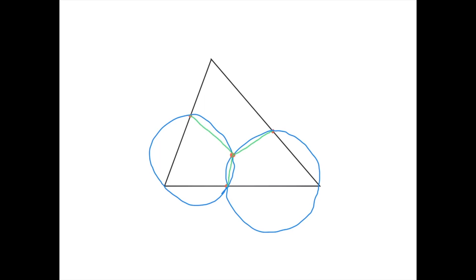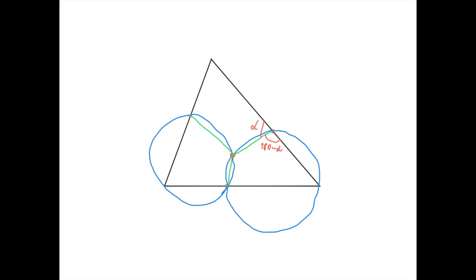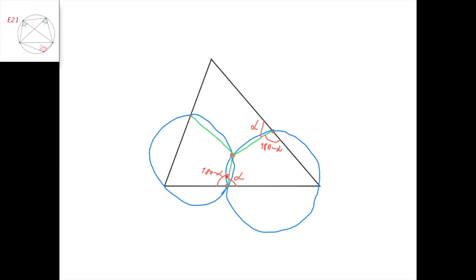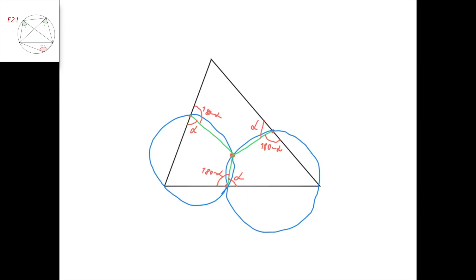Let's chase some angles. Suppose this angle here is alpha. Then the angle here is 180 minus alpha. Now because this quadrilateral here is cyclic, we have that this angle plus this angle is 180, and so this angle here is alpha. And so this angle is 180 minus alpha. Now this quadrilateral here is cyclic, so this angle plus this angle is 180, and so we get that this angle is alpha, and so this one is 180 minus alpha. We get that in this quadrilateral the sum of two opposite angles is 180 degrees.